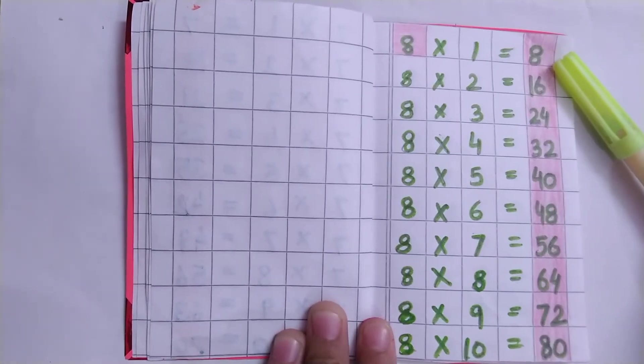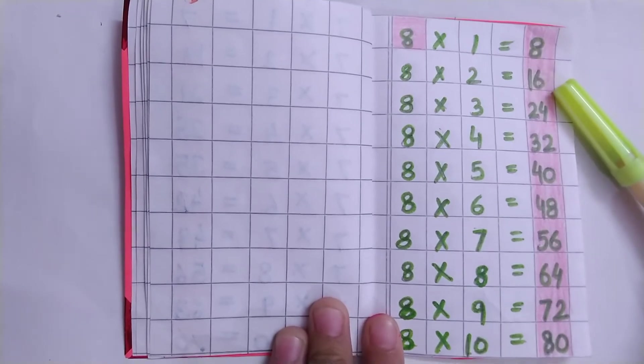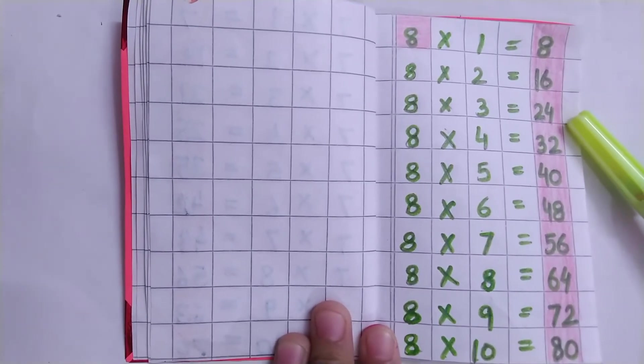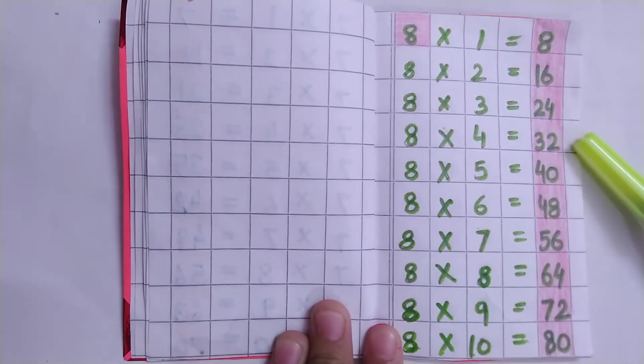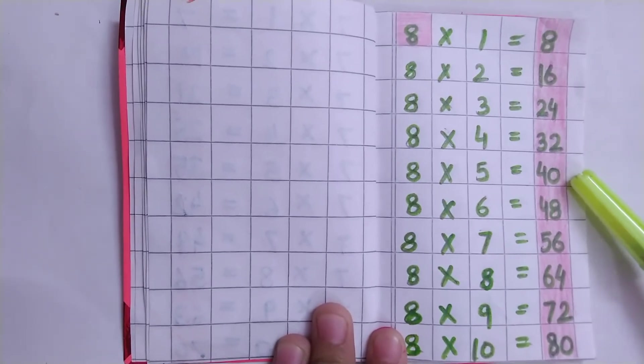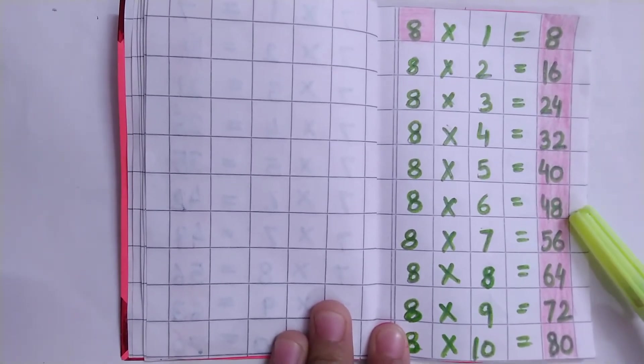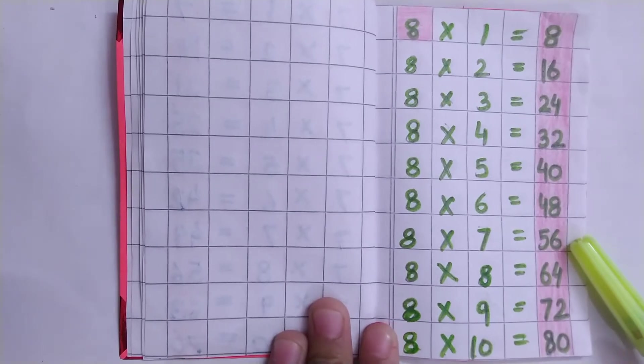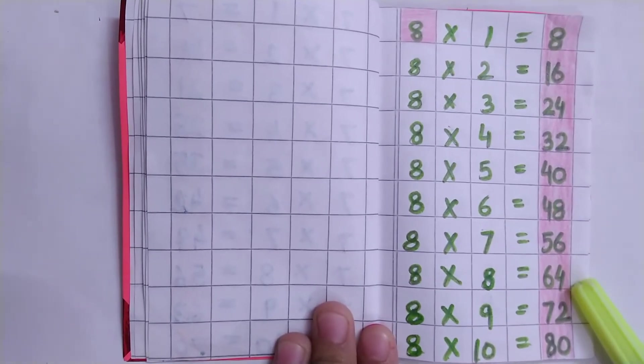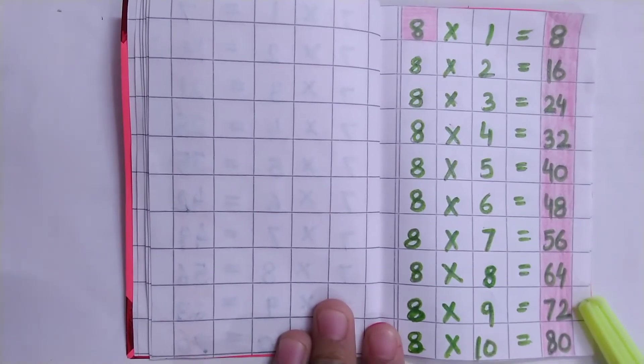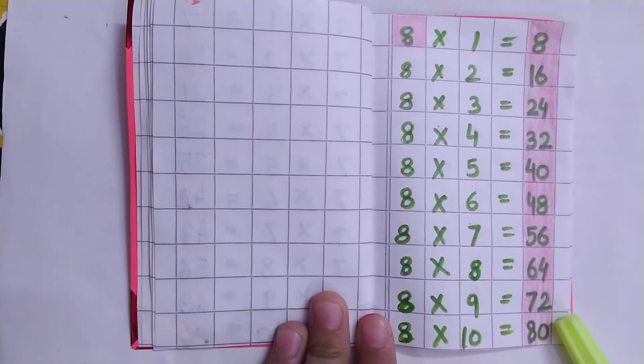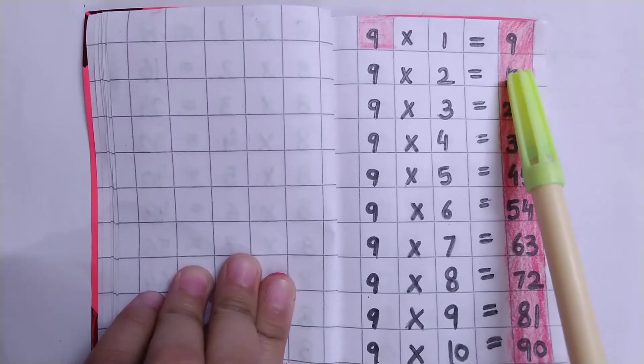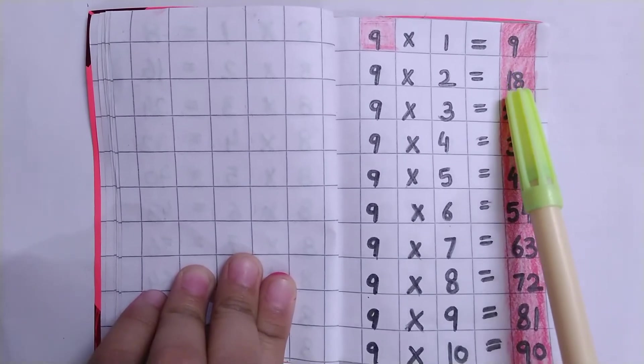Table of 8: 8×1=8, 8×2=16, 8×3=24, 8×4=32, 8×5=40, 8×6=48, 8×7=56, 8×8=64, 8×9=72, 8×10=80.